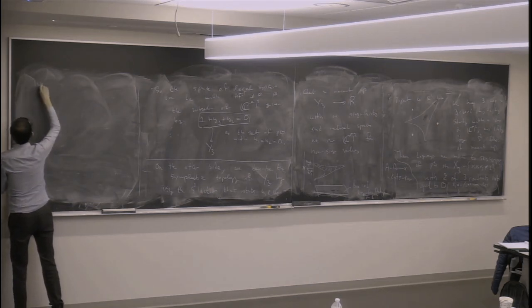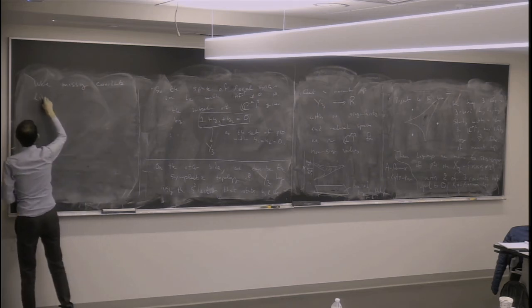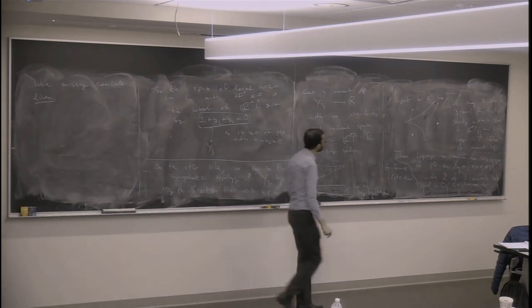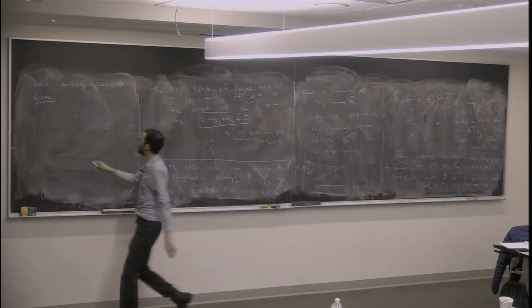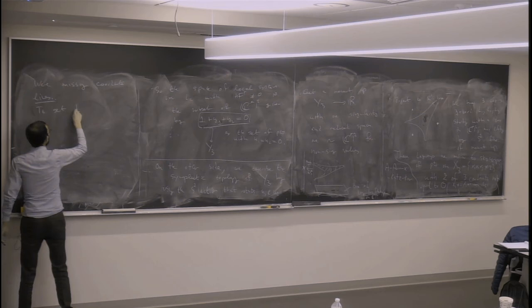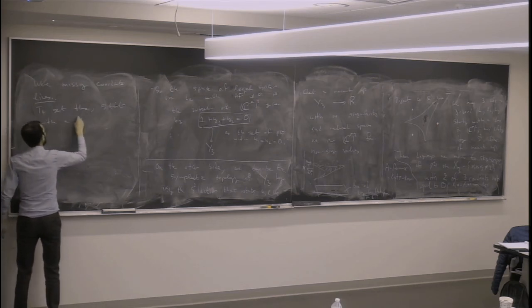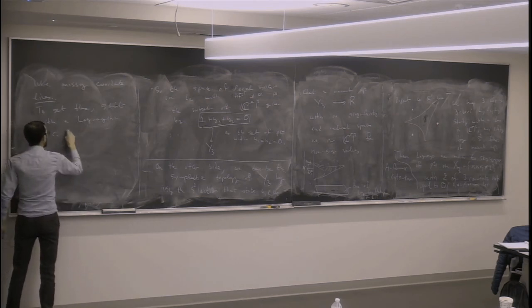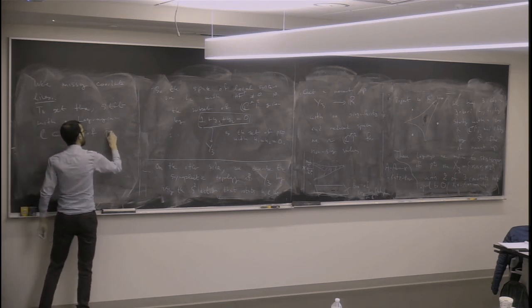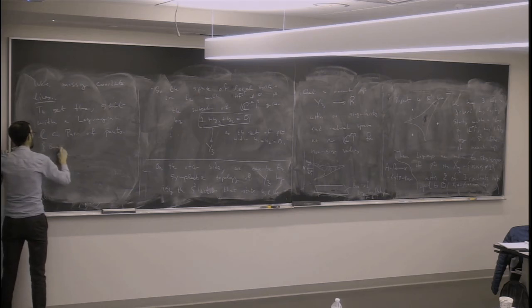Just to be precise: x₁ not equal to 0 and x₂ not equal to 0 will correspond to a Lagrangian called L₁₂. Then there are two more possibilities. By the way, this already covers — if you look at the projection to zero, there was a singular fiber, and the singular fiber was the union of the coordinate hyperplanes. We already have the interior of the coordinate hyperplanes; what we're missing are the coordinate lines.